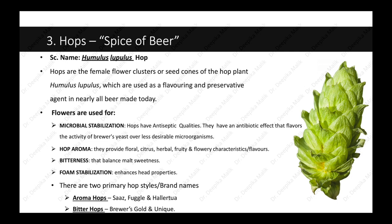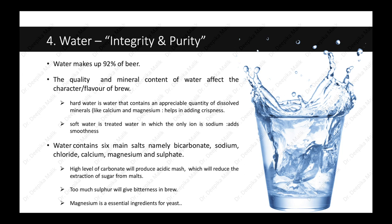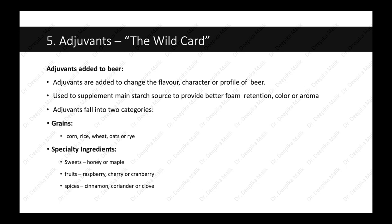The fourth ingredient in beer making is water, which makes up to 92 percent of beer. The quality and mineral content of water affects the character and flavor of the beer. Hard water, which contains dissolved minerals like calcium and magnesium, adds crispiness to the beer. Soft water — treated water in which the only ion is sodium — adds smoothness to the beer. Water contains six main salts: bicarbonate, sodium, chloride, calcium, magnesium, and sulfate. High levels of carbonate produce an acidic mash that reduces sugar extraction; too much sulfur gives bitterness; magnesium is an essential ingredient for yeast. Therefore it is important to choose the right quality of water.